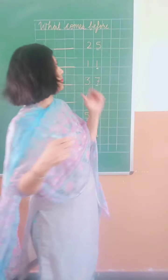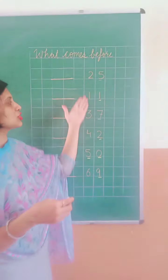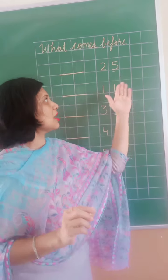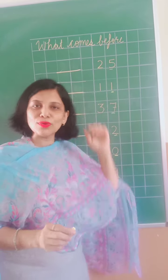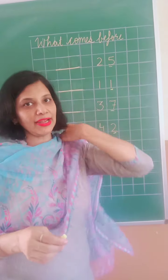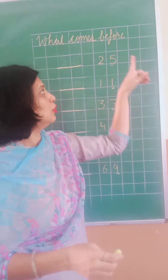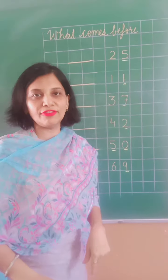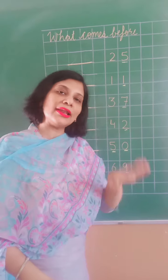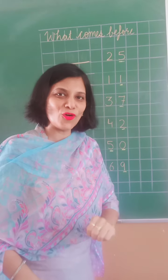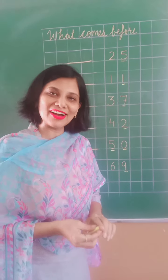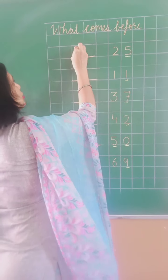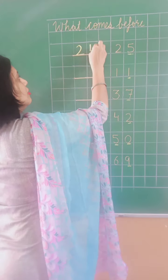Now look at the blackboard. Yahan pehle kuch numbers likhe hue hain. You have to tell which number comes before. Number 25 — 25 se pehle kya aata hai? Aapne first digit dekhna hai. First digit is 5, to 5 se pehle kya aata hai? 4. To 25 se pehle kya aata hai? 24. So I am going to write 24.